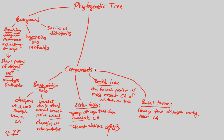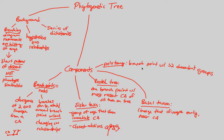Another component we need to understand is polytomy. This is actually a bad thing in a phylogenetic tree — something we want to try to avoid because it gets confusing for us as the viewer. Polytomy is basically the opposite of a rooted tree: it's when you have a branch point with greater than two descendant groups. This gives us very unclear relationships. Your textbook has examples of these bad polytomic trees — you do not want this.